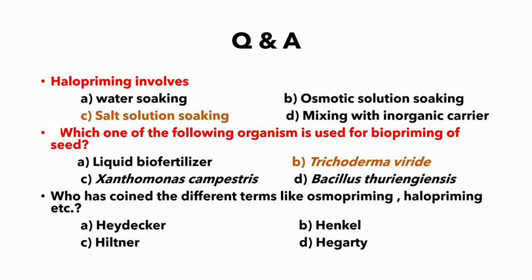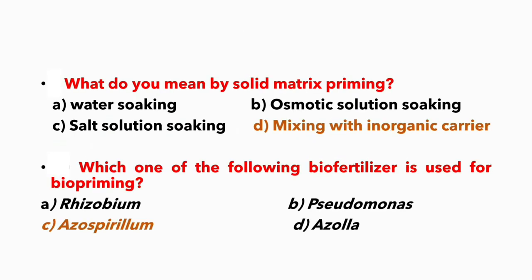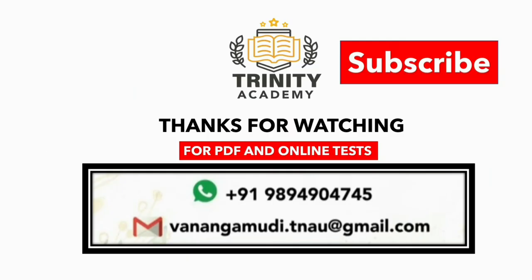We have completed seed germination and seed priming as a part of chapter 8 in unit 3. Now let us see important questions and answers from these two topics. Halo priming involves salt solution soaking. Trichoderma viride is used for bio priming of seeds. The term osmo priming, halo priming, etc. were coined by Heydecker. Solid matrix priming means mixing with an inorganic carrier. Azospirillum is the bio fertilizer used for bio priming.